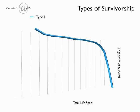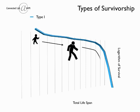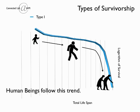Type 1 survivorship curves are convex and illustrate species with high survivorship whose members most often live out the majority of their lifespan. Certain plants and mammals tend to follow this trend, most notably human beings.